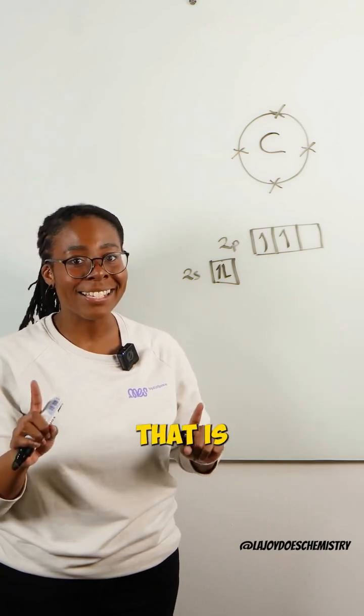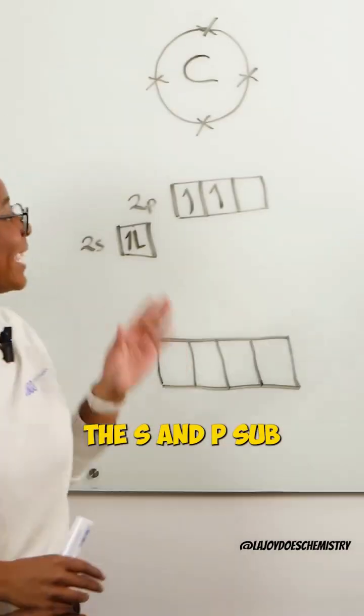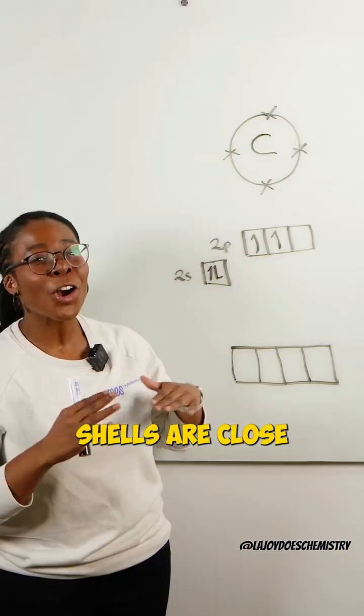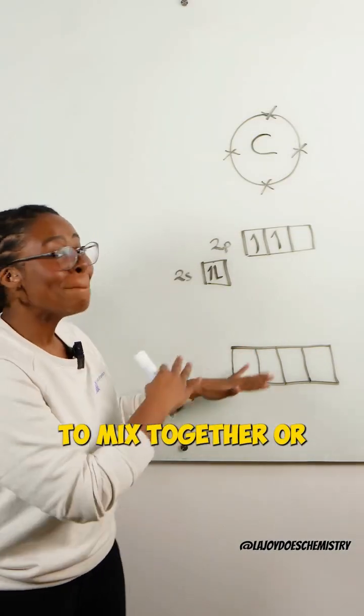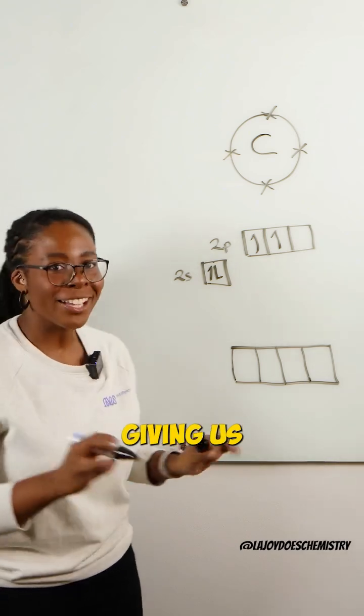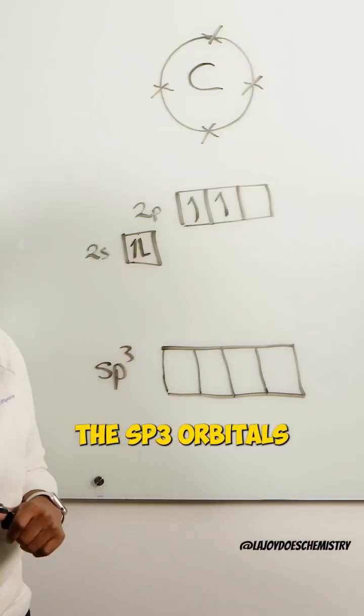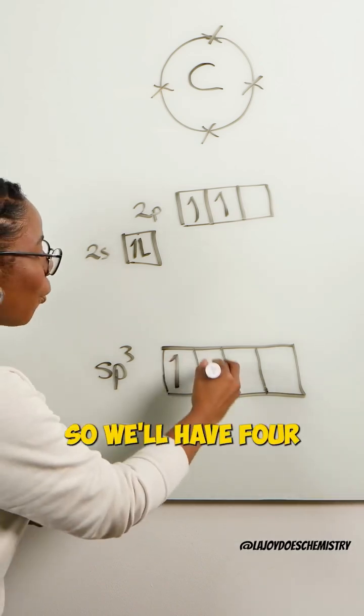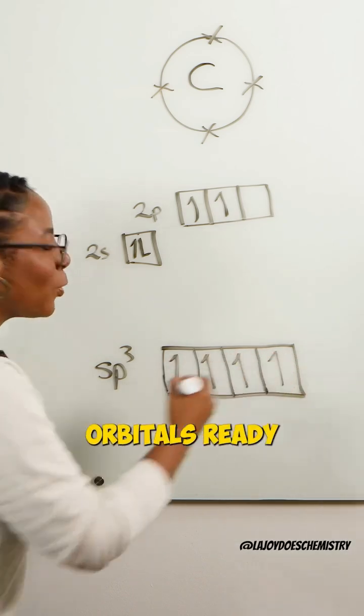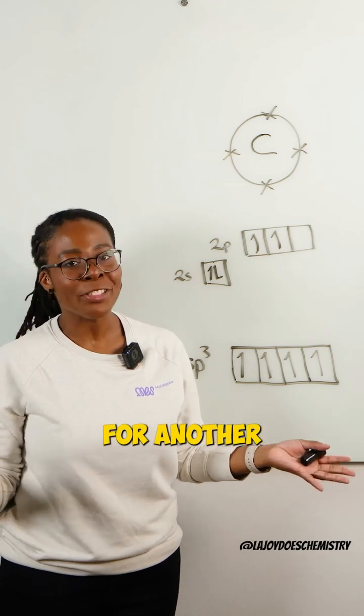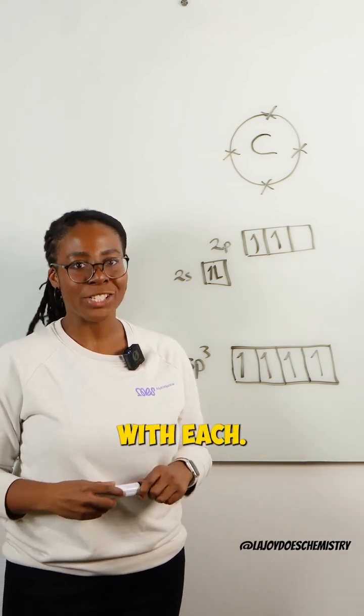The answer to that is hybridization. The S and P subshells are close enough in energy to mix together or hybridize, giving us the SP3 orbitals. So we'll have four singly occupied orbitals ready for another electron to come in and pair up with each.